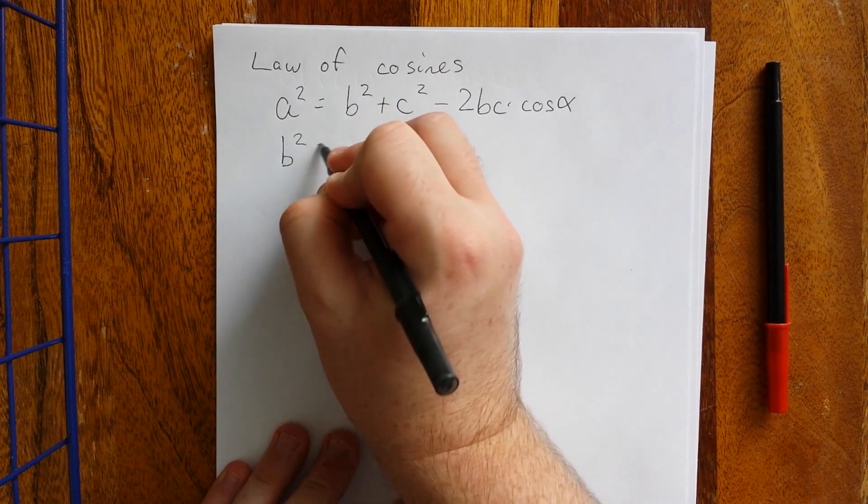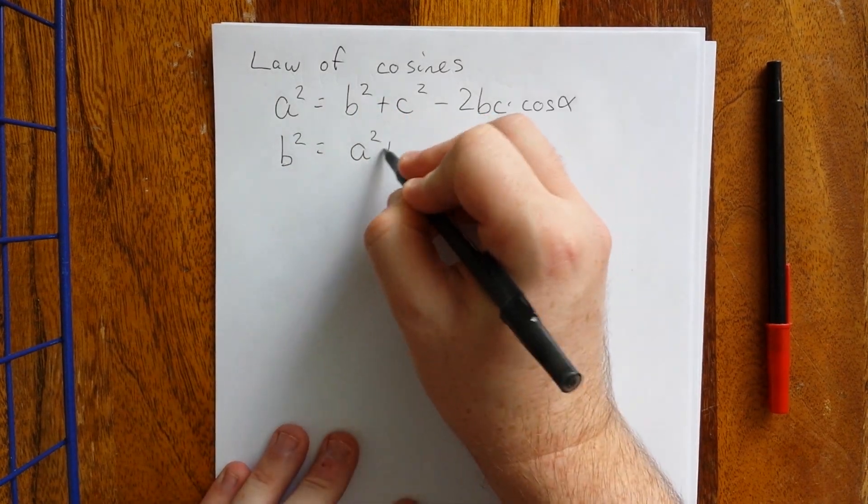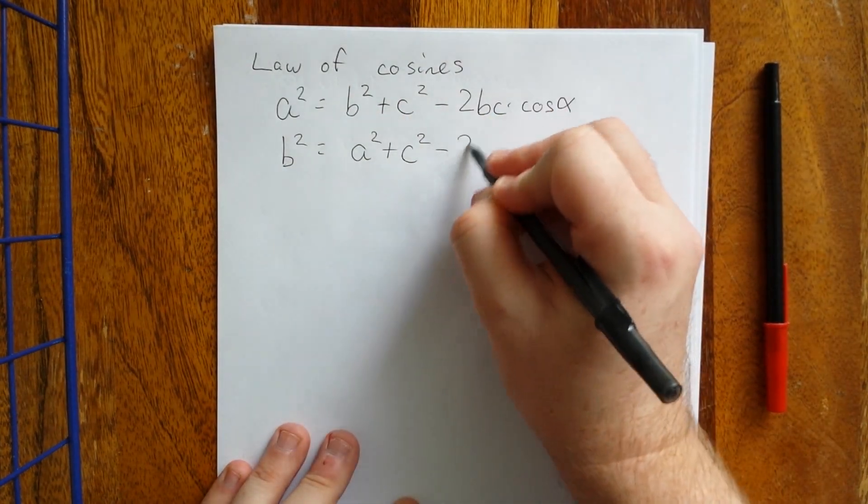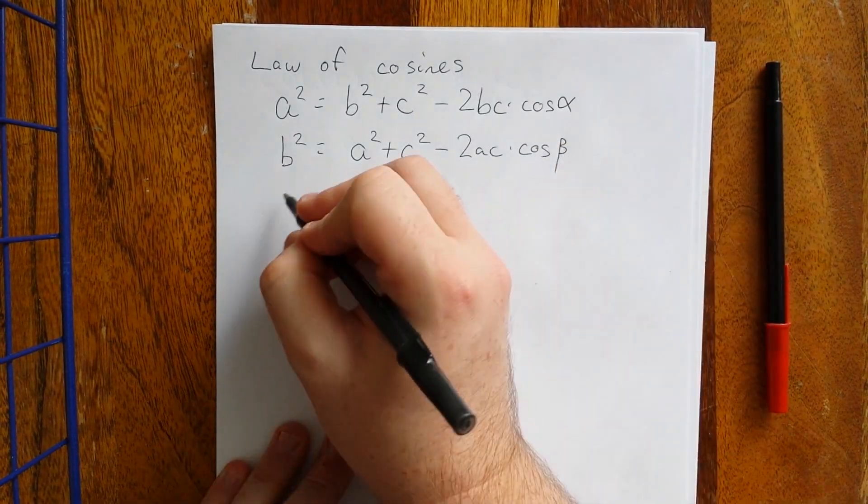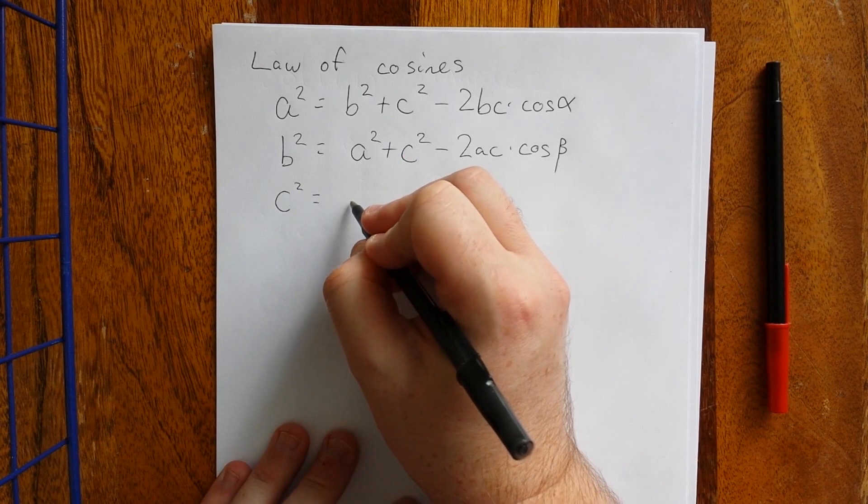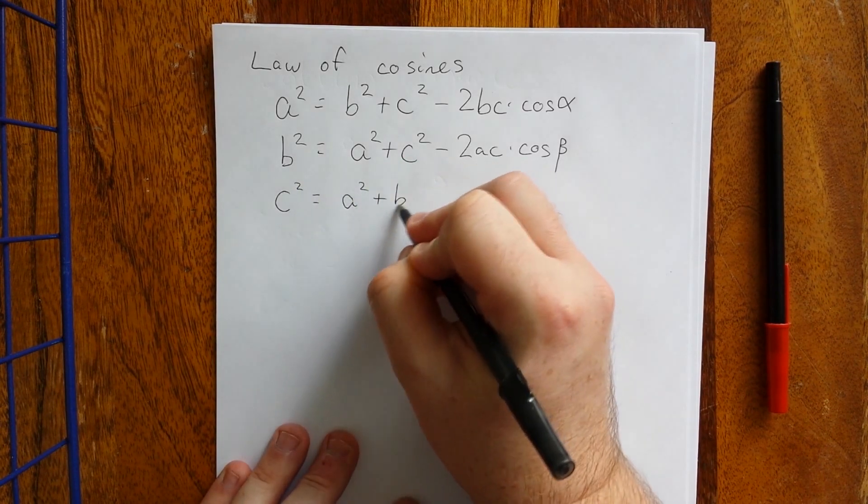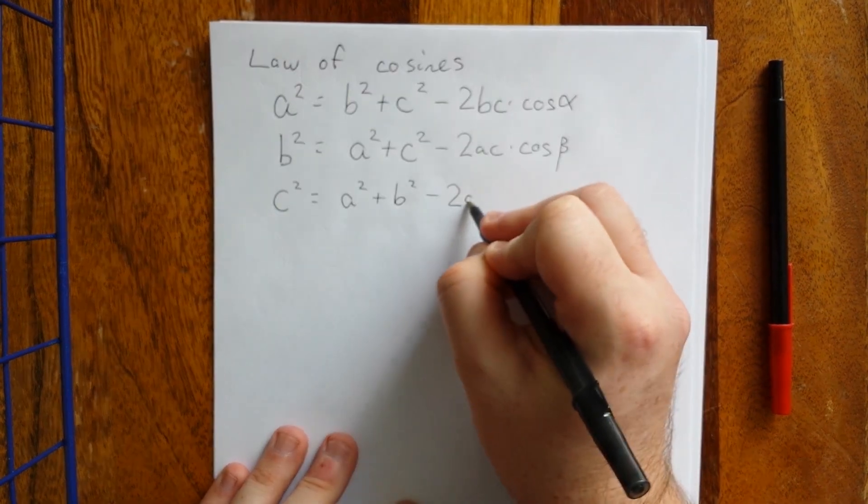We can actually rearrange that in terms of any of our sides. The statement of the law of cosines should not depend on what your labeling scheme is.